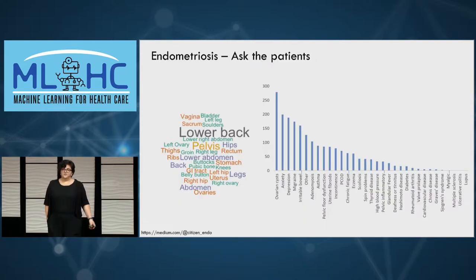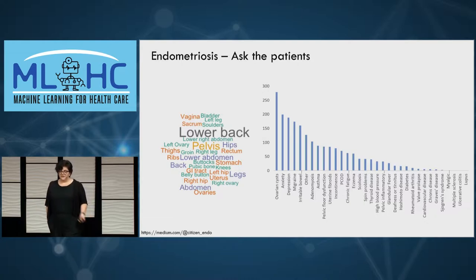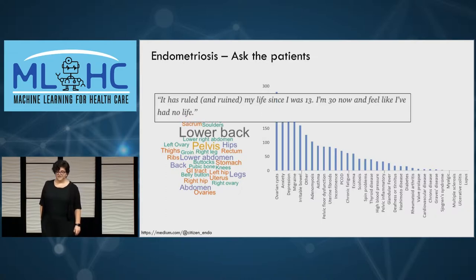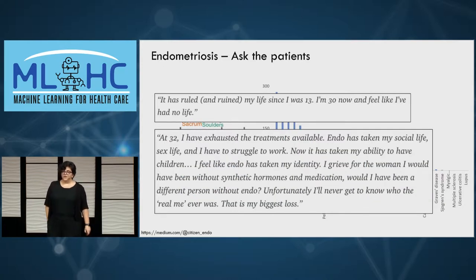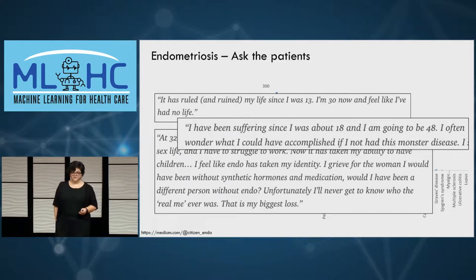One question we can ask ourselves is: the gynecologists, the epidemiologists, the clinical researchers are all telling us information about the disease — but what about the patients? We did a survey with about 1,000 patients, and these are the different body locations where they reported chronic pain, the other diagnoses they had been given — showing a lot of comorbidities. The patient quotes are very hard to read because they talk about entire lives being affected by the disease, and a lot of regret and grief from patients because of the disability that comes with it.